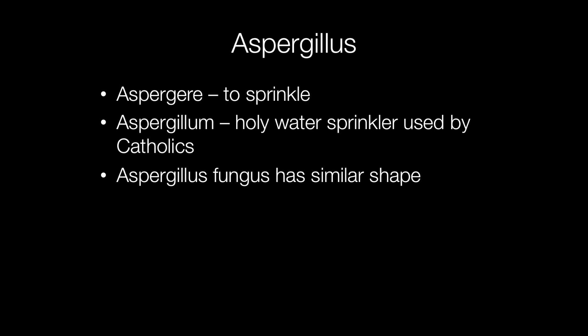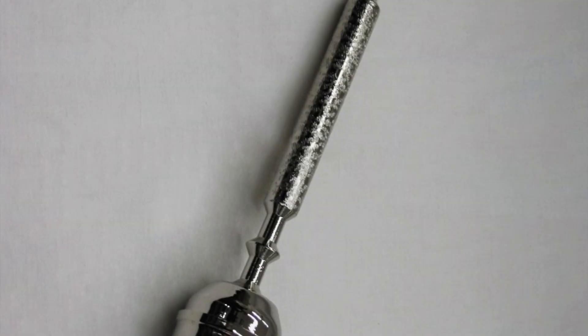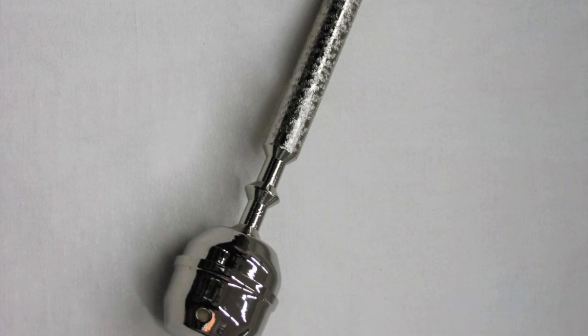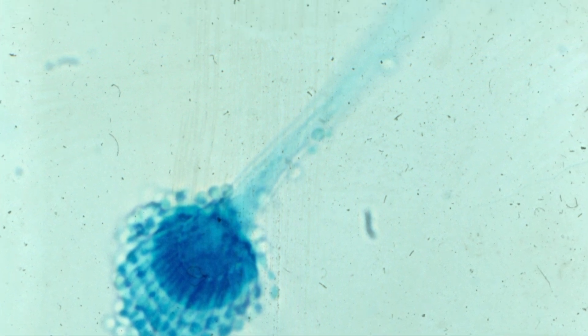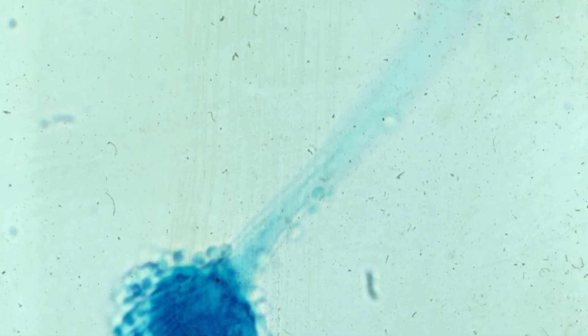The term Aspergillus has quite an interesting origin. Asperger means to sprinkle, and an Aspergillum is a device used by the Catholic Church to sprinkle holy water. The shape of an Aspergillum is very similar to the shape of the Aspergillus fungus. Here is an Aspergillum, and here is the fruiting body of Aspergillus that produces the spores.